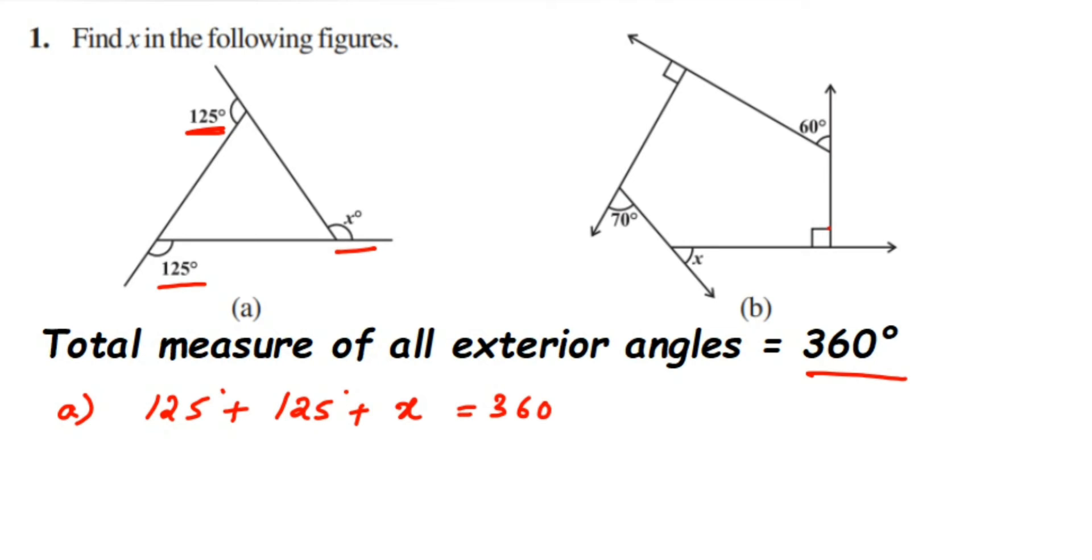Now add the first two angles which is 250, so 125 plus 125 is 250, so 250 degrees plus x is equal to 360 degrees.